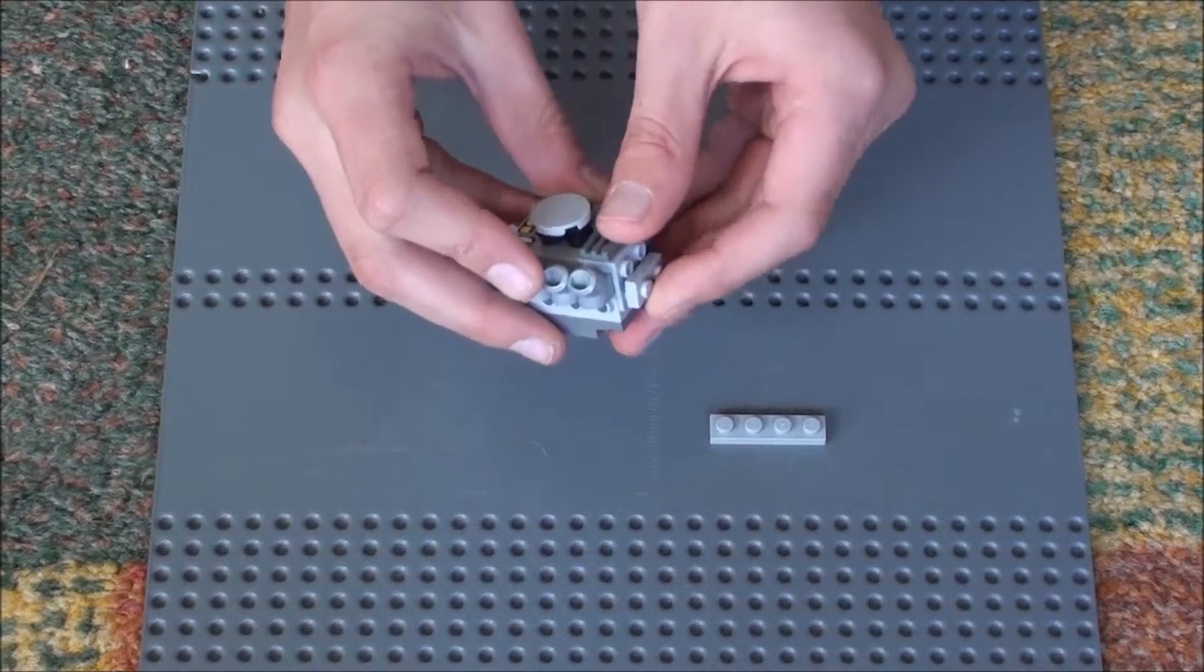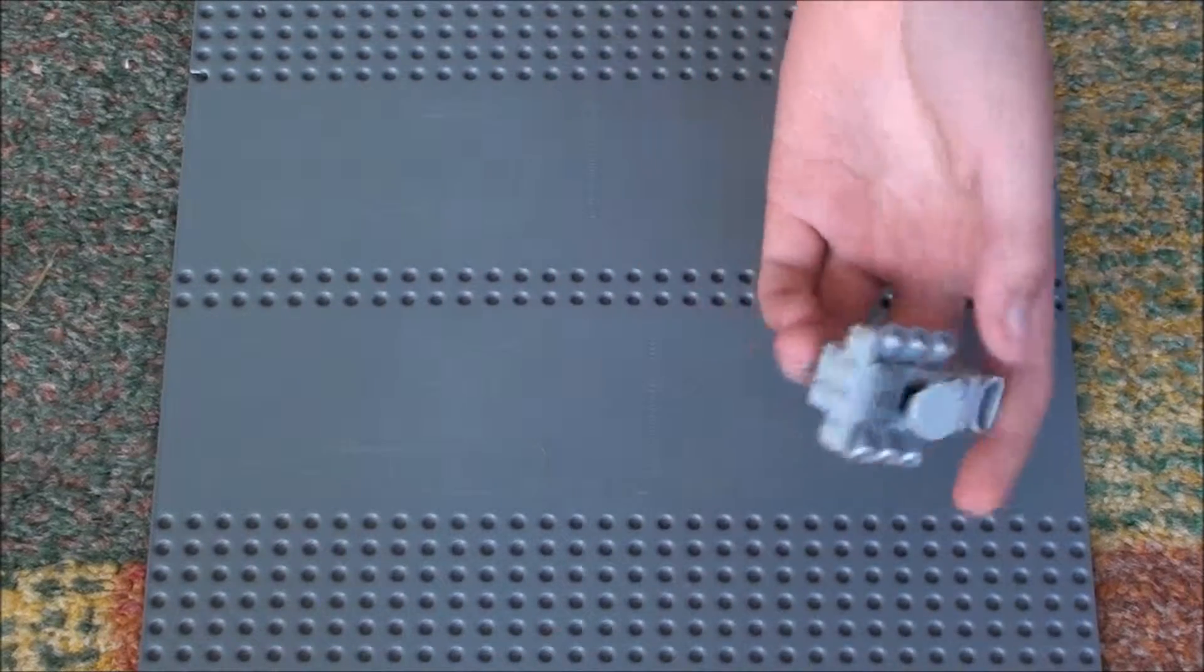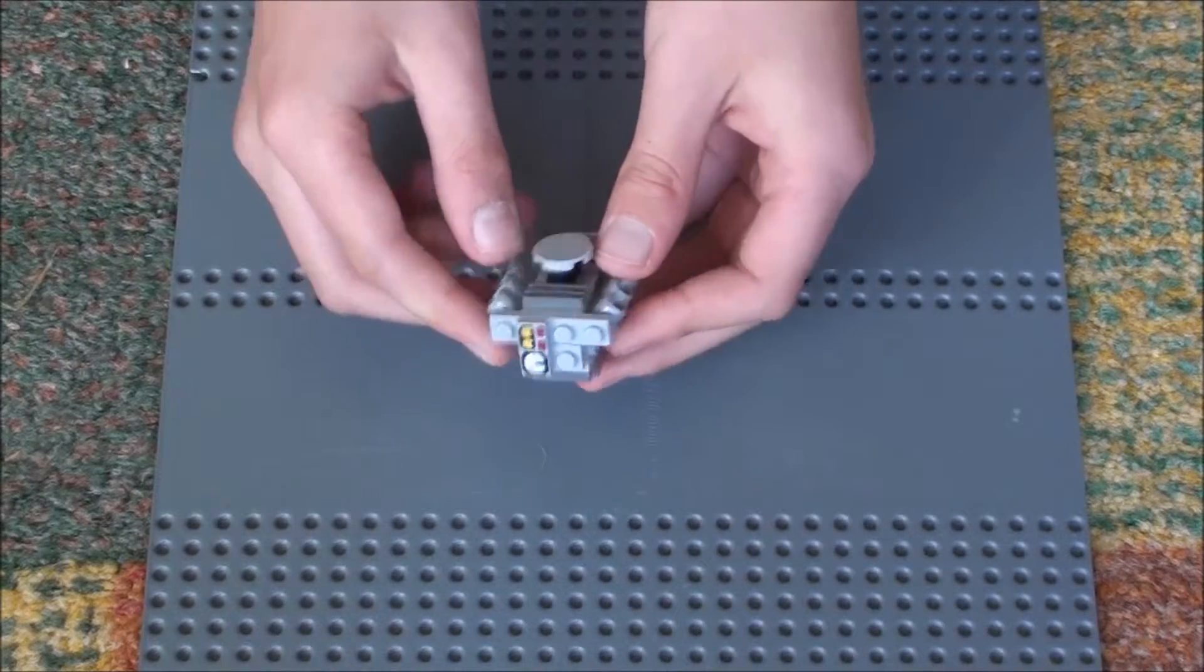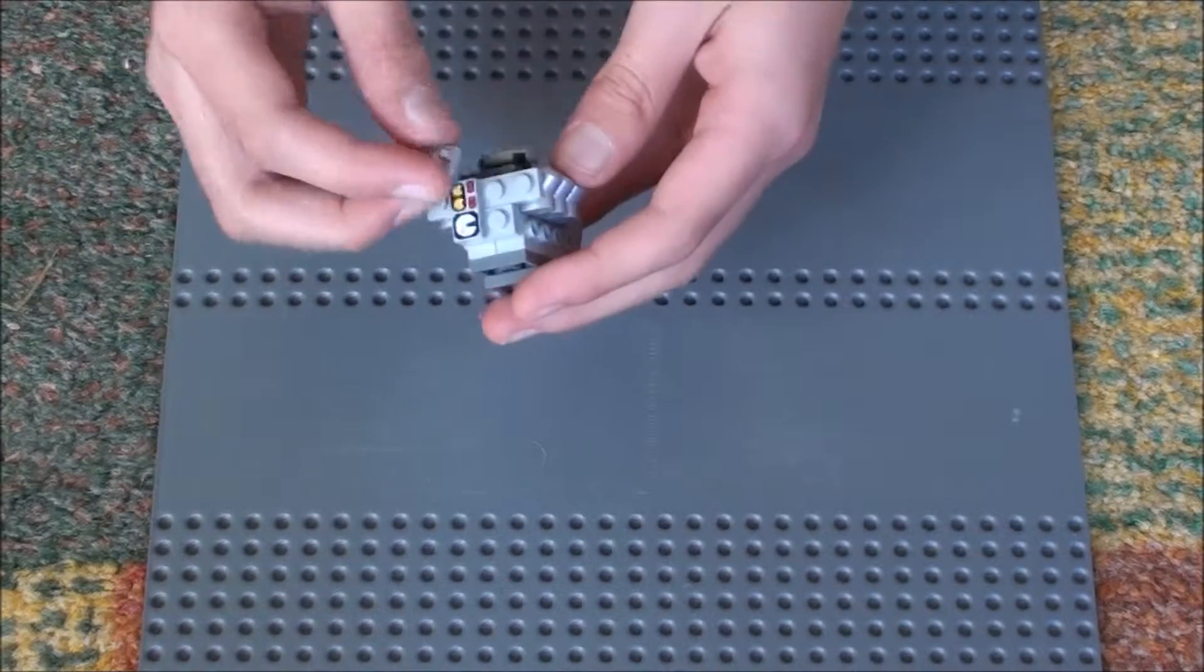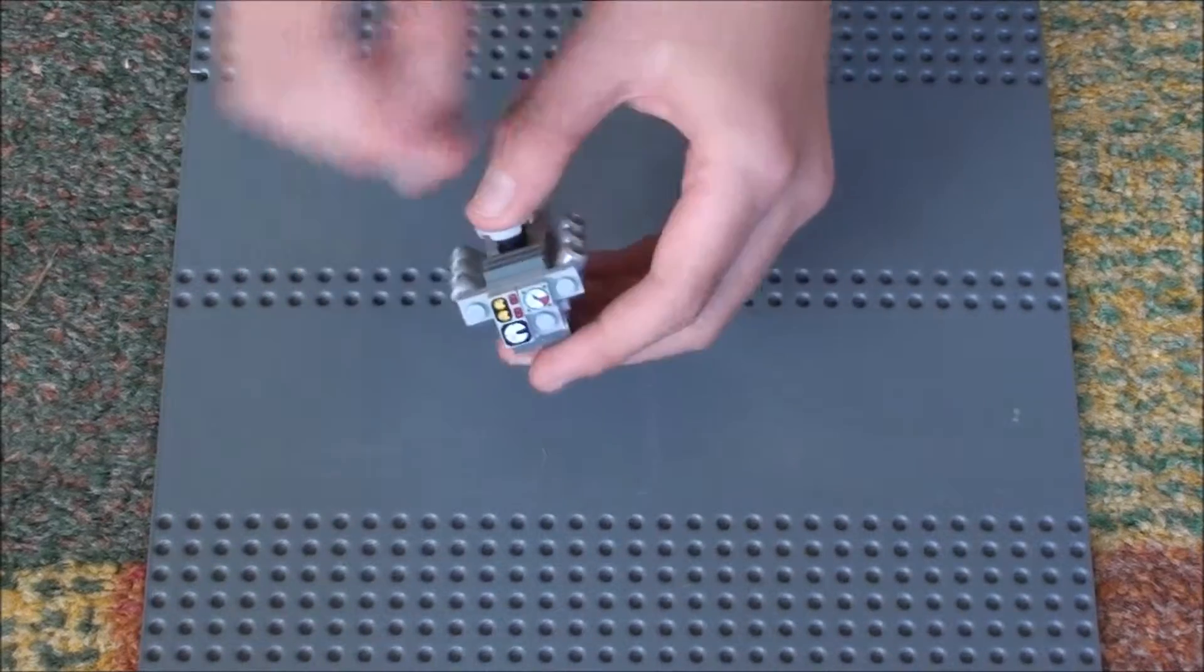Put the 1x2 on the bottom and the 1x4 on the top. Then get another printed dial and put it there. Then another printed 1x1 dial and put it there.